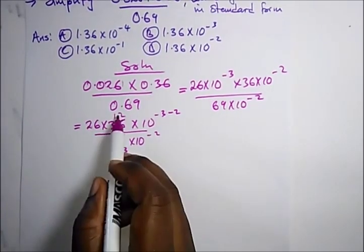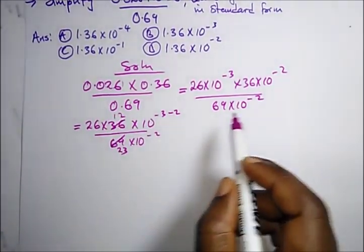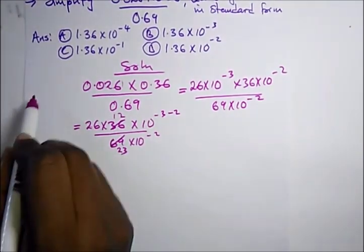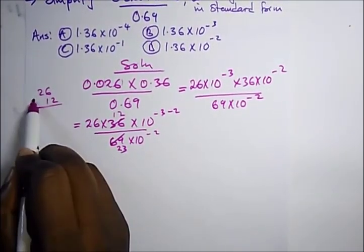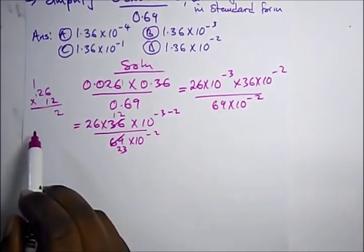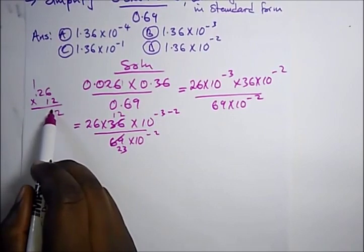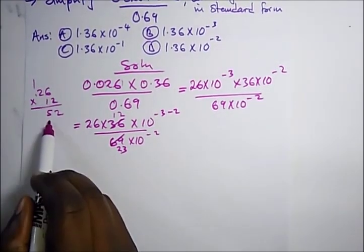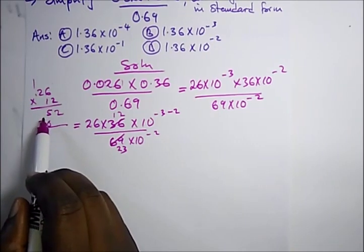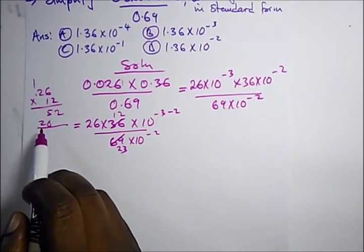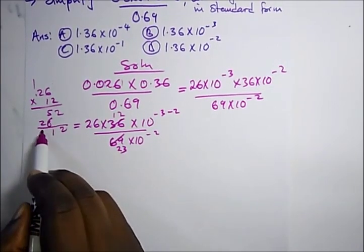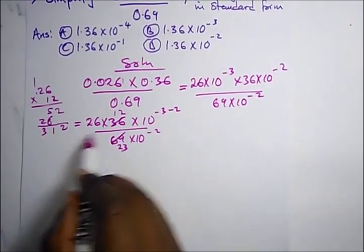Now we multiply: 26 times 12. In JAMB there's no calculator, so you have to be fast. That gives us 2, then 1, then 4+1=5, then 6, then 2. When we add it all up we get 312.